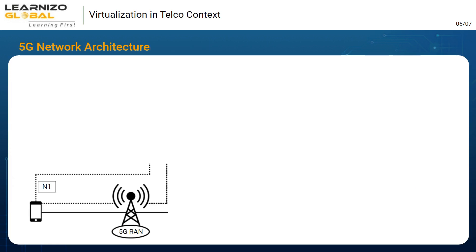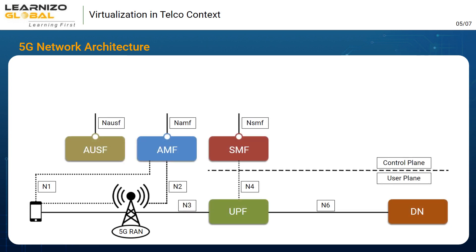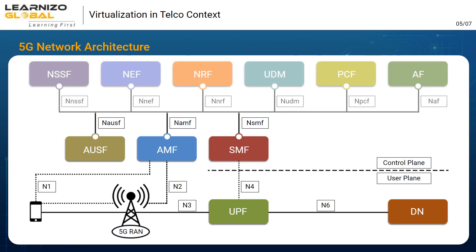5G core network goes a step ahead — all network functions are defined as CNFs, or Cloud Native Network Functions, and communicate with each other using REST API-based communication over an open protocol like HTTP/2. Not only core networks,